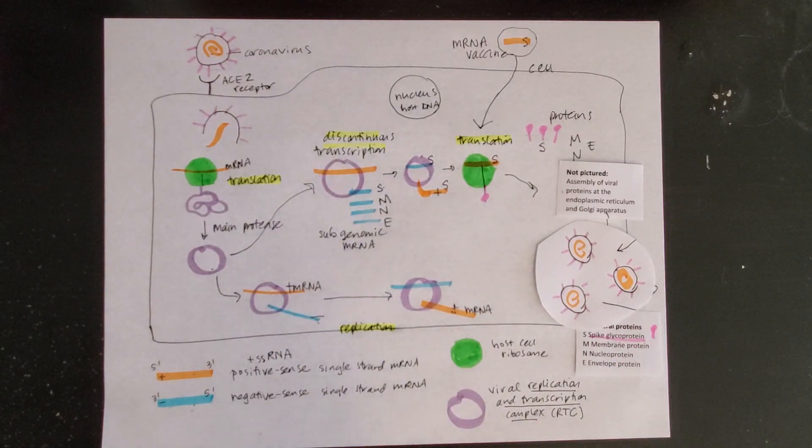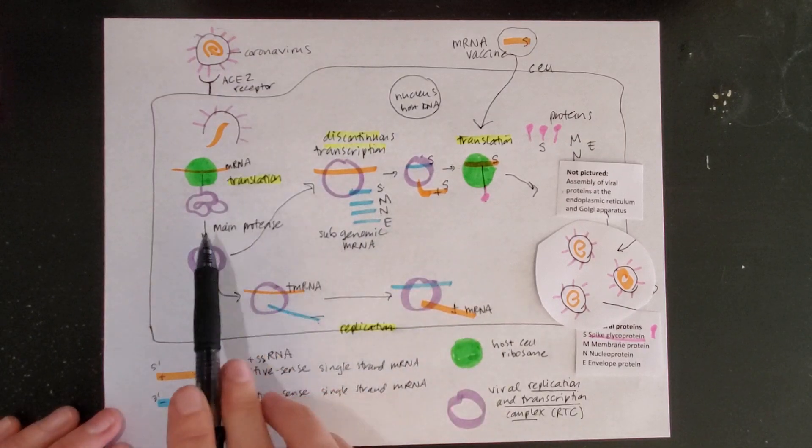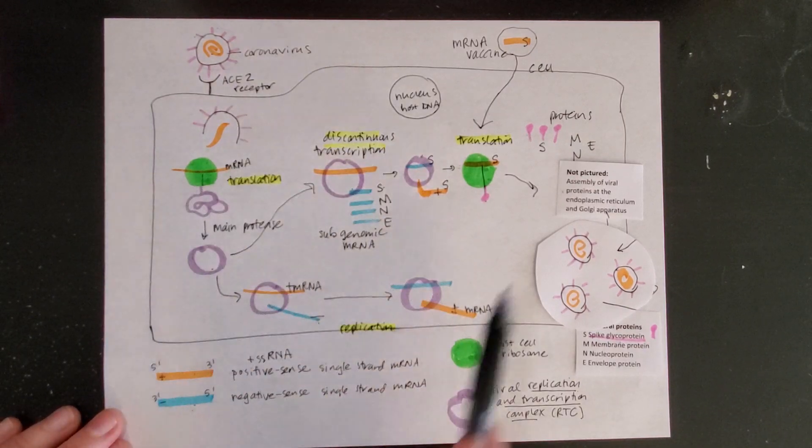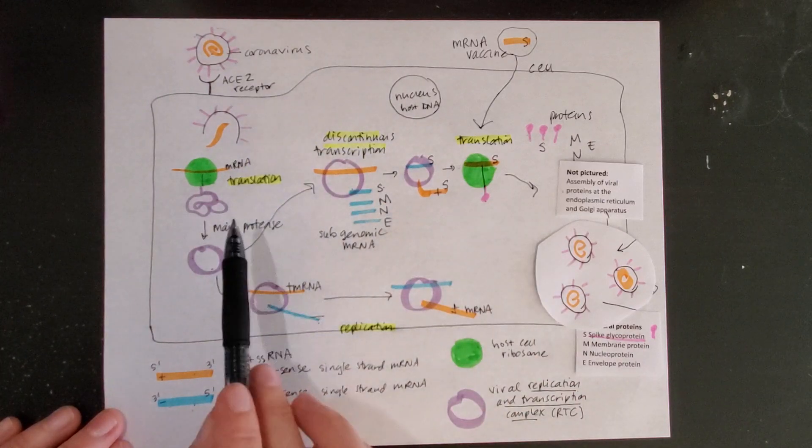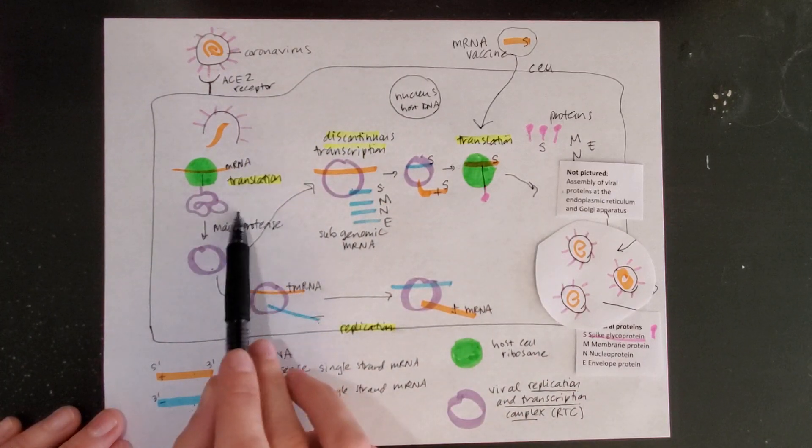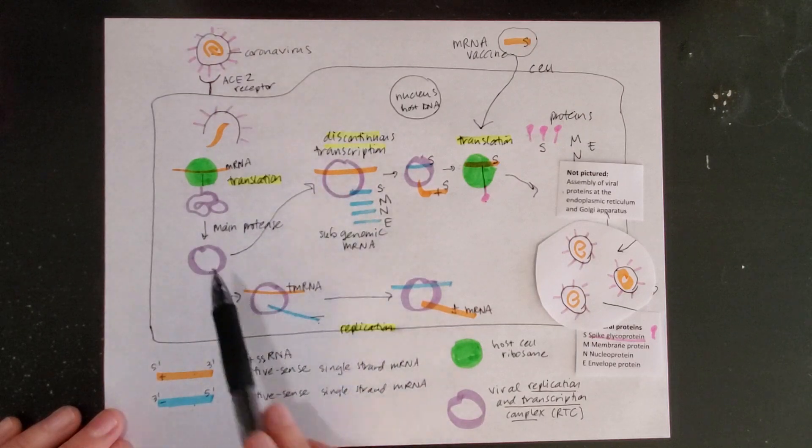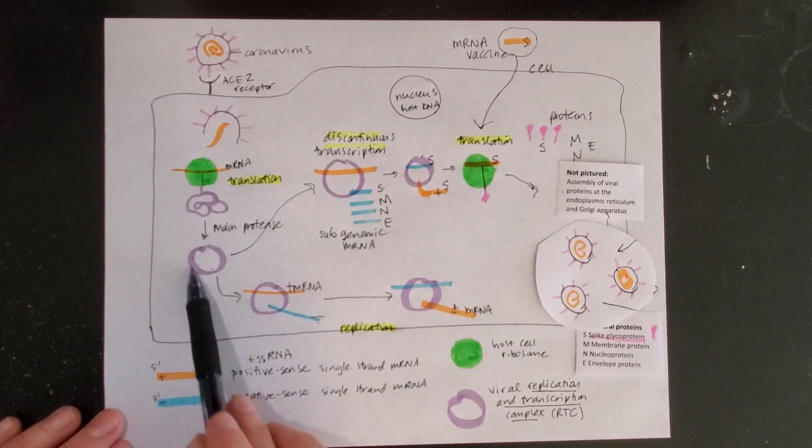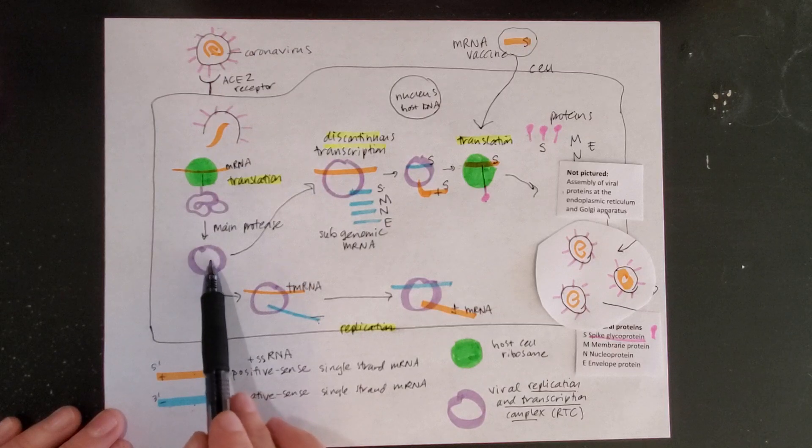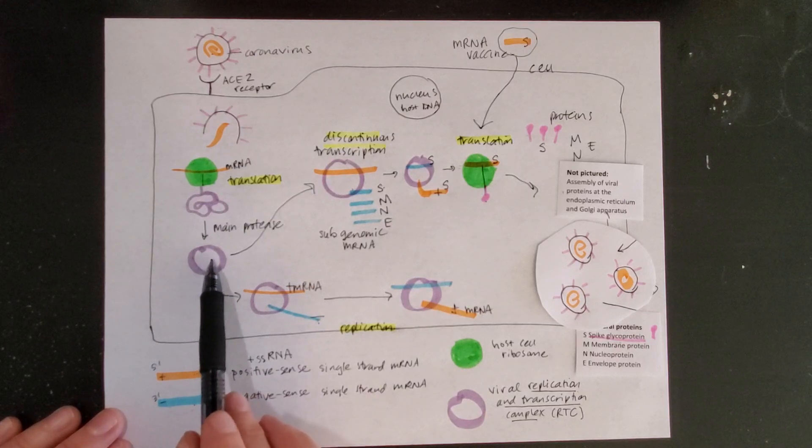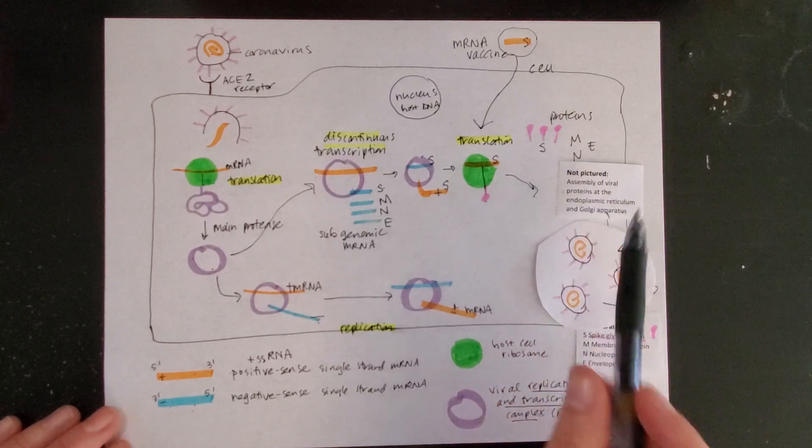One other thing that fits into this is when you hear about antiviral medications. Antiviral medications would target various steps in these processes. For example, there are antivirals that will try to inhibit this main protease or could inhibit aspects of this replication and transcription complex or the assembly here.